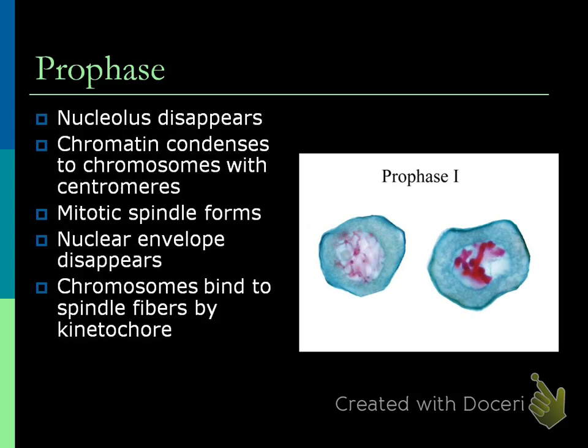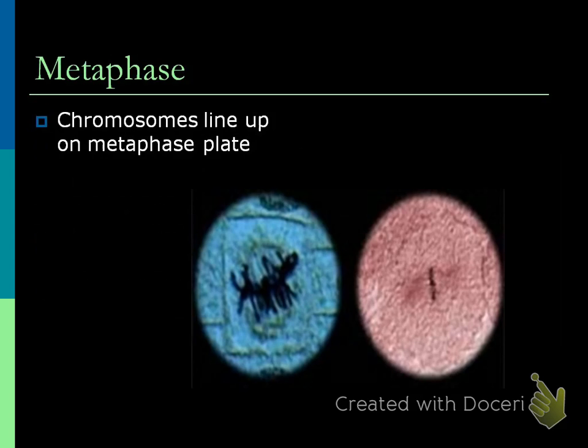The next one is metaphase. 'Meta' means middle, so I always see meta as middle. Here's a plant cell and here's an animal cell - they line up along what's called the metaphase plate. This is where cleavage is going to occur in animal cells, and the cell plate is going to form in plant cells. Metaphase doesn't take very long at all - the mitotic spindles actually move all the chromosomes around to the right place.